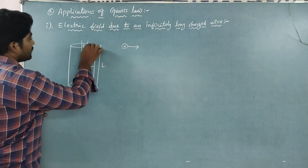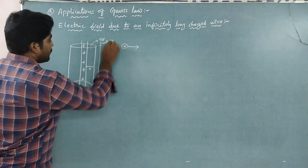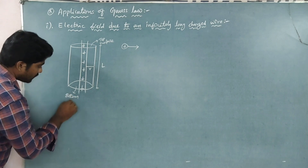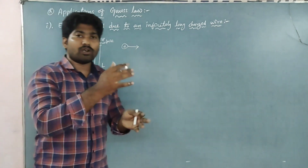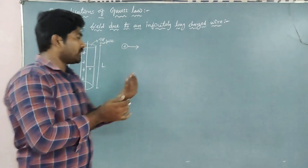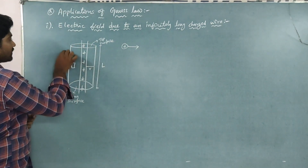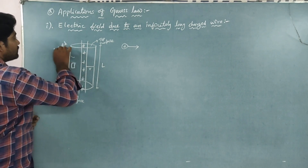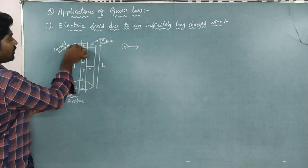If you have three surfaces: one is the top surface, and one is the bottom surface. Think of it like a water bottle — you can see the top surface, the bottom surface, and the covered curved surface. So we have three parts to find out: the top surface, the bottom surface, and the curved surface.